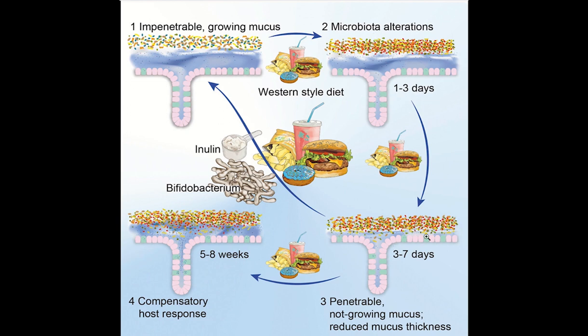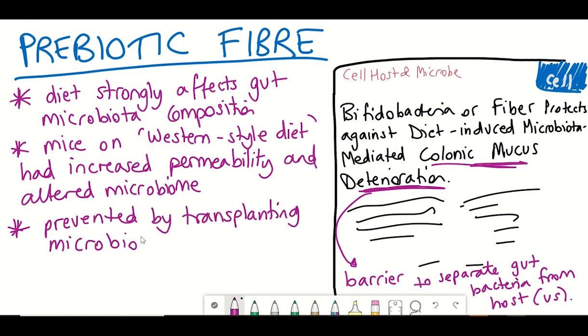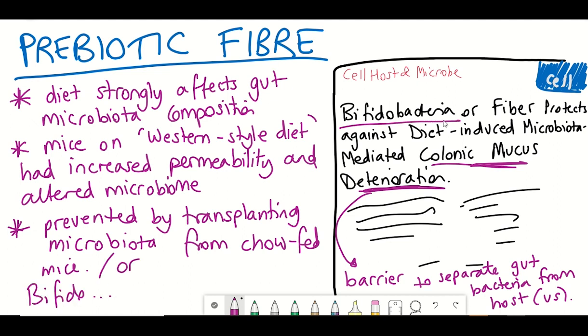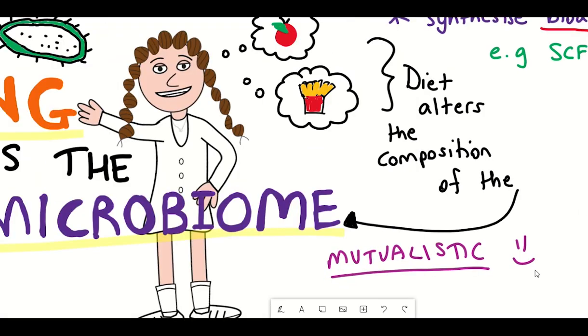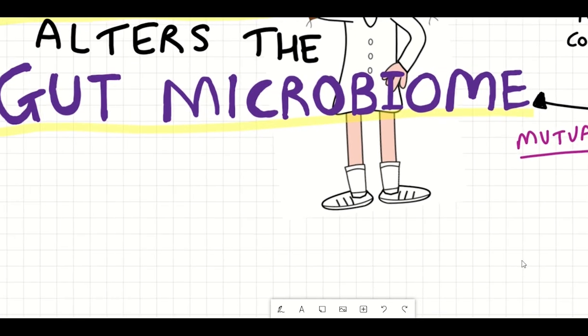The consequence that this has is it puts the host cells at risk of infection by different pathogenic microorganisms, such as Clostridium difficile, that can cause disease in humans. In this study, the mice that were on the Western style diet, they transplanted microbiota from normally fed mice, and this helped to prevent the deterioration of this mucous layer. Studies like this really enforce the importance of the composition of the microbiome.